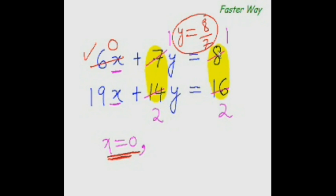And using the same logic, if the ratio of the coefficients of x equal to the ratio of the constant, then variable y would be equal to 0.